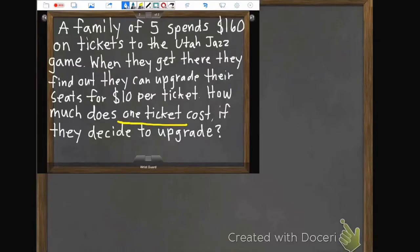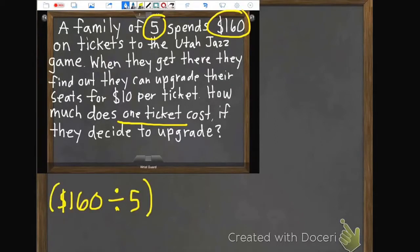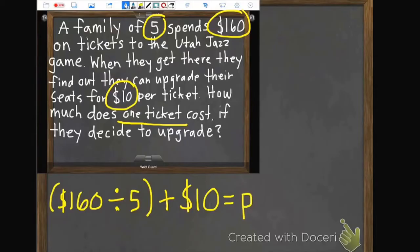First of all, we need to figure out how much each ticket was before they upgrade. So if we have five people in our family and it costs them $160, we need to figure out how much that would cost. So we would do $160 divided between the five people in their family. I put that in parentheses down there in our equation because that's what I need to figure out first. And we always do what's in the parentheses first. Once we figure out how much the tickets cost in the beginning, then we can add that 10 extra dollars to upgrade. So plus $10. And then we'll figure out what that equals. We're going to use the cost per ticket as a p for per ticket.